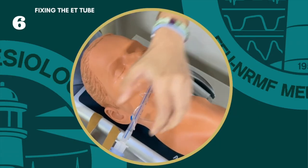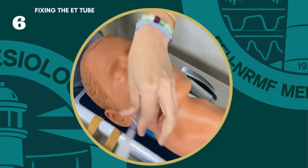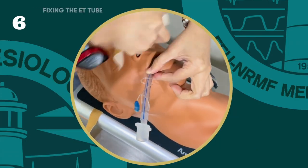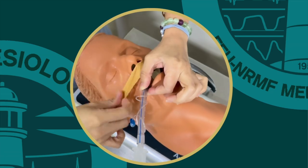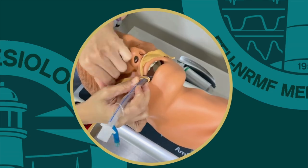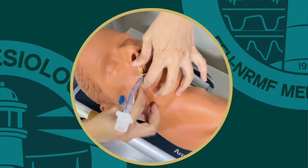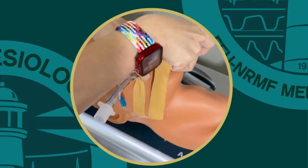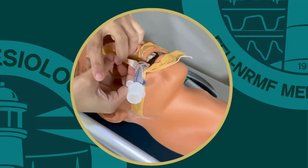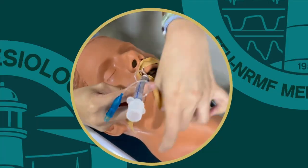Step 6: Fixing the ET tube. When the tube is in the correct position, secure it with tape and attach the ET tube to the bag valve apparatus and continue to ventilate the patient.